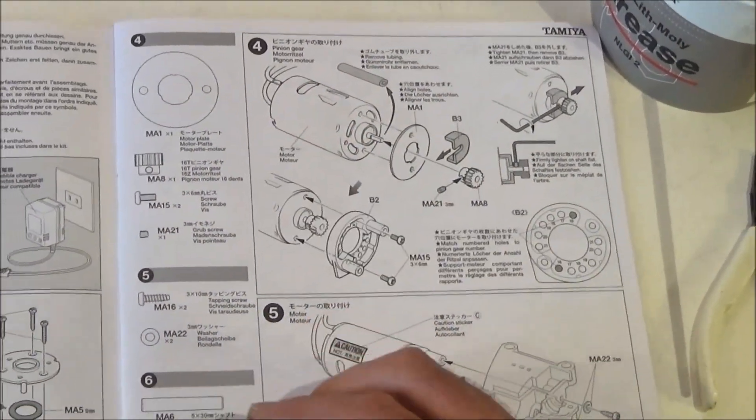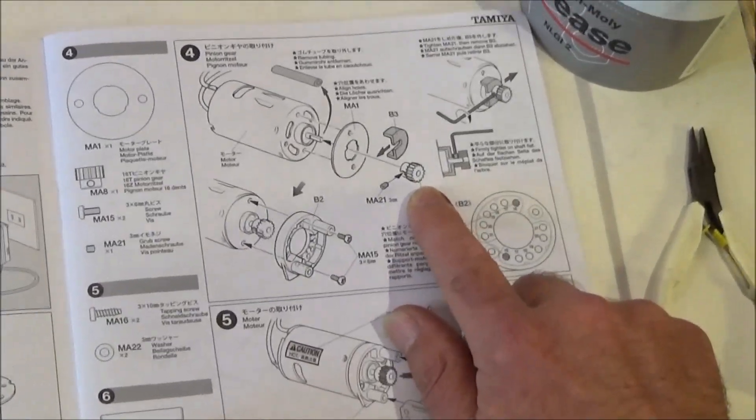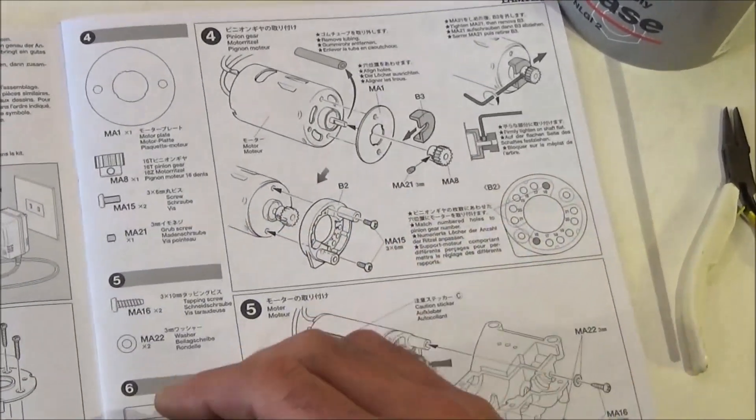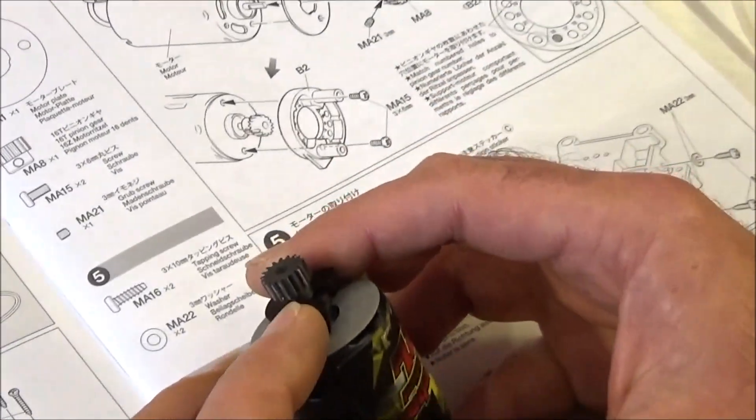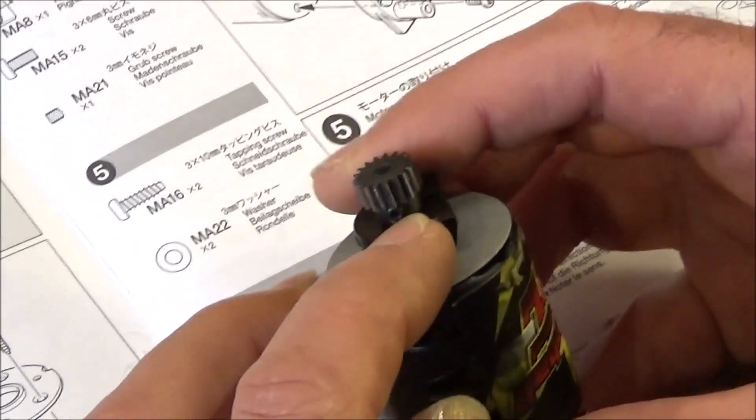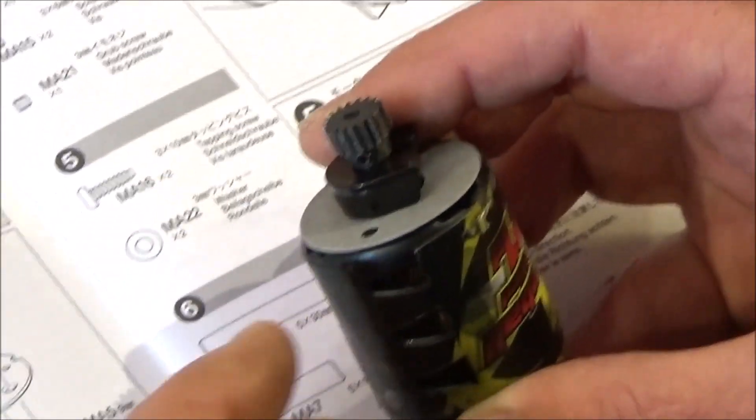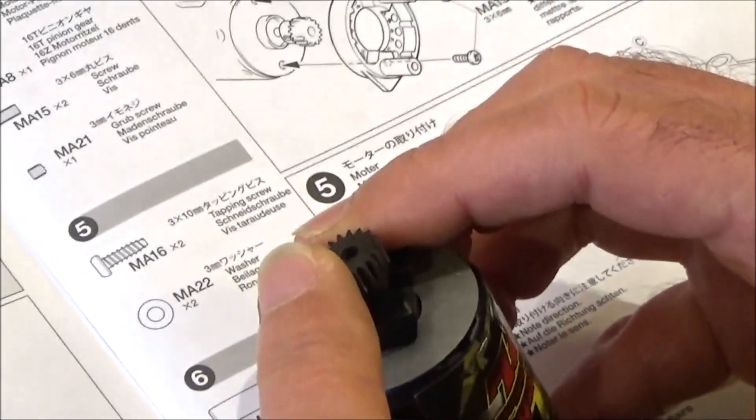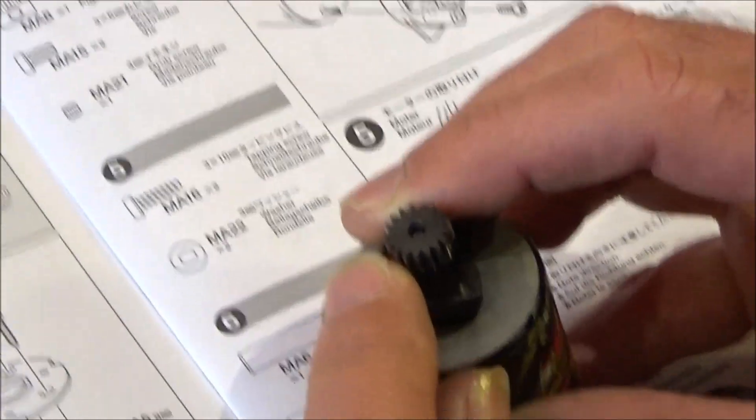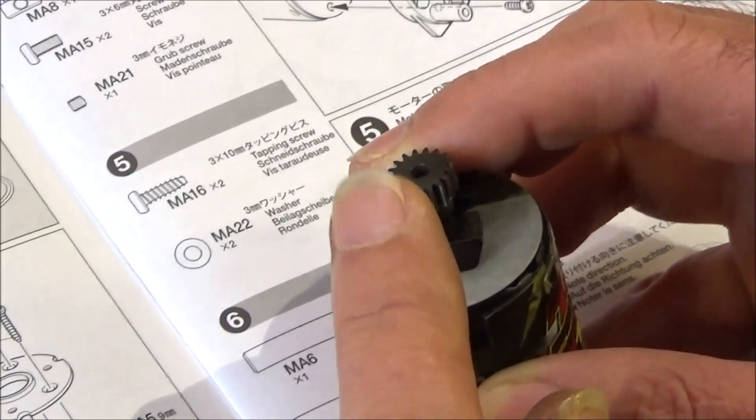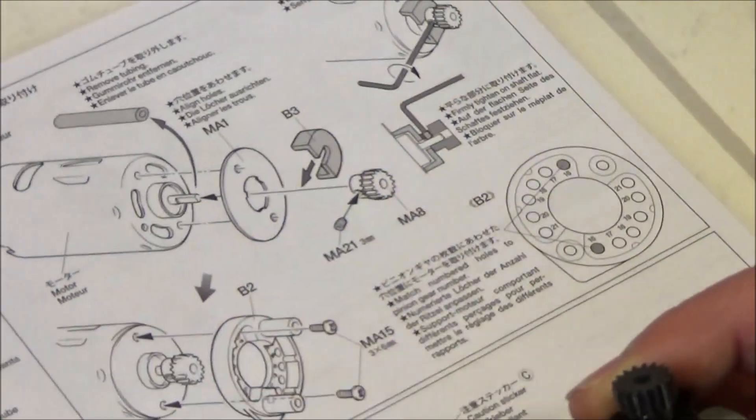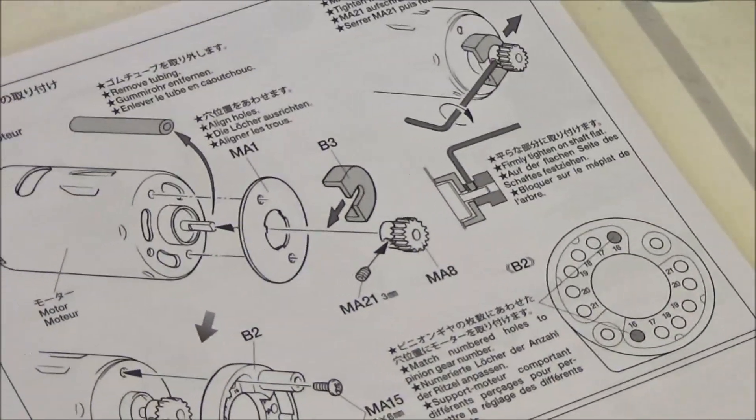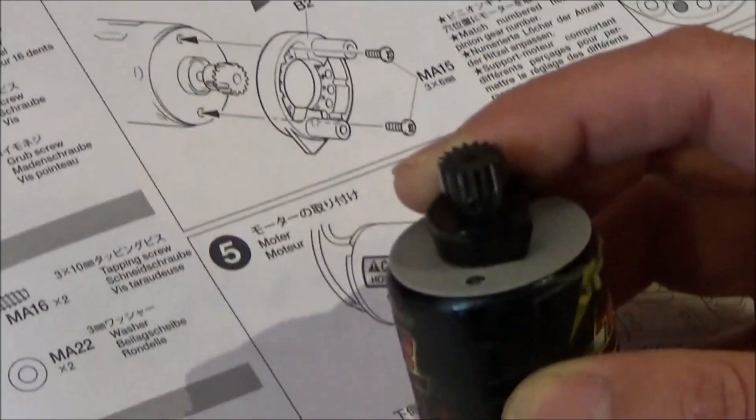Step four, this is fitting the pinion to the motor and the motor plate to the motor. You can see I'm not using the standard motor that comes with the kit. This is an old Fireball 21 double turn that I used to have in my Neo Scorcher. And also there's a 17 tooth pinion from the Neo Scorcher. It's a steel one, so I'm going to put this one in. The standard is a 16, but I think this should work okay with this motor. If it doesn't, I can always change it.